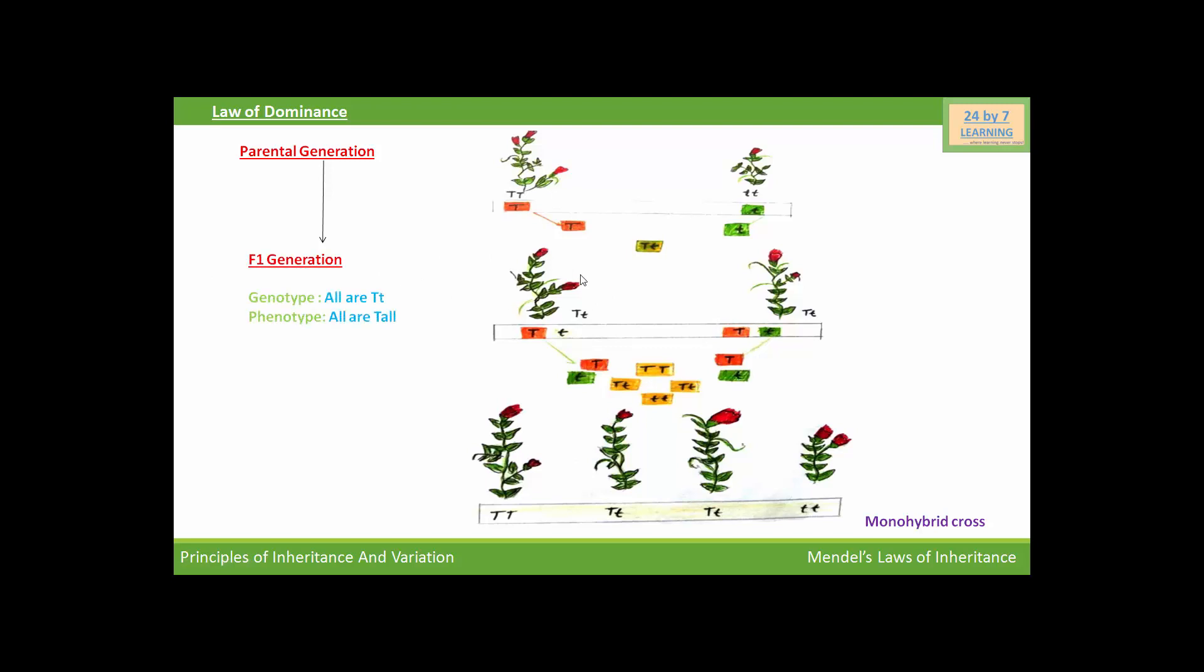All the plants have genotype Tt, that is capital T and small t, one allele for tallness and one allele for dwarfness. But in phenotype, all the plants were tall, because gene of tallness capital T is dominant over gene of dwarfness small t.